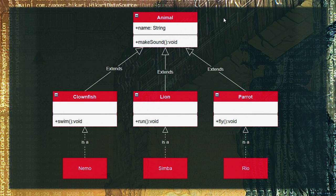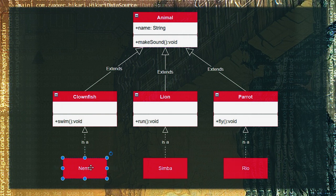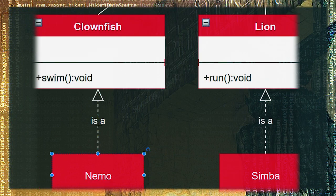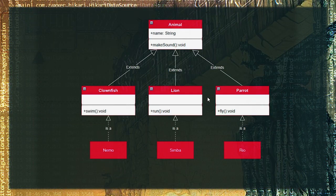Here we have a diagram with a superclass called Animal, and three classes inheriting from it: Clownfish, Lion, and Parrot are children of Animal. At the bottom we have objects, which are instances of each class. Nemo is an instance of Clownfish — we use the broken line blocking arrow notation to describe an 'is-a' relationship. Nemo is a Clownfish, Simba is a Lion, Rio is a Parrot.